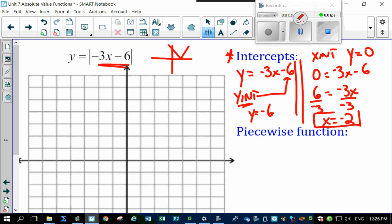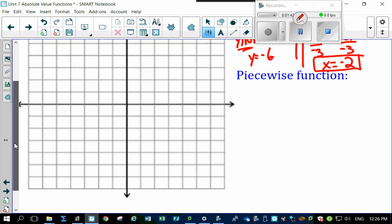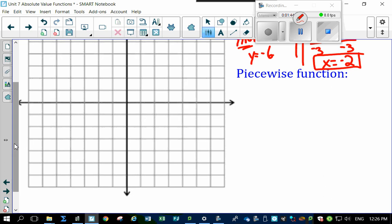So there's your critical point. So we can start plotting some of these things on there. So let's do that first. So we have an x at minus 2. 1, 2. There's our critical point right there.